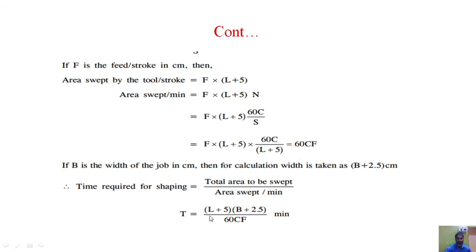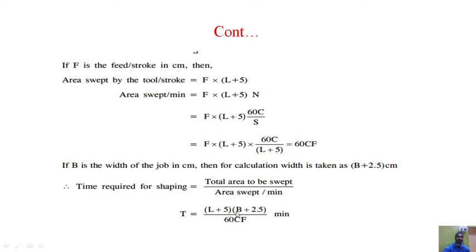The formula for time in shaping operation is: Time = (L + 5)(B + 2.4) / (F × C × 60) — but the key formula to remember for examination is: Time for shaping = (L + 5)(B + 2.4) / (F × C), where L is the length of the workpiece, B is the width of the workpiece, F is the feed per stroke (in cm), and C is the cutting speed. That is the important formula to remember.